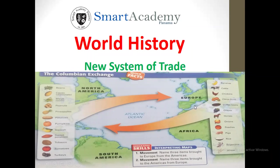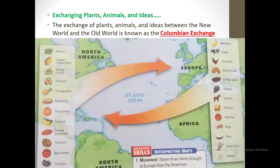And from Europe, because we didn't know anything about certain animals and vegetables, they were sent to America. It was an exchange of products. That's why it's called the new system of trade — a very easy topic.